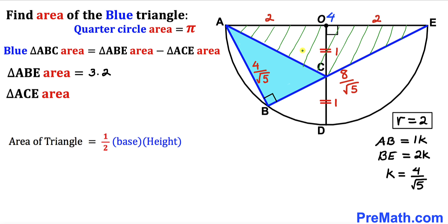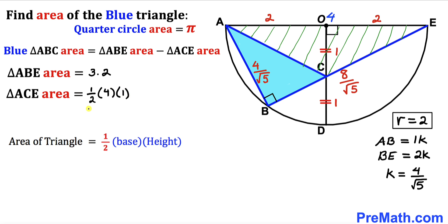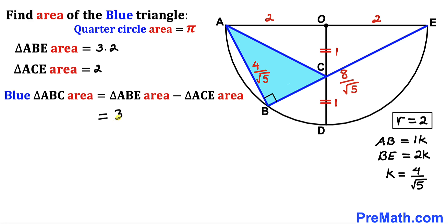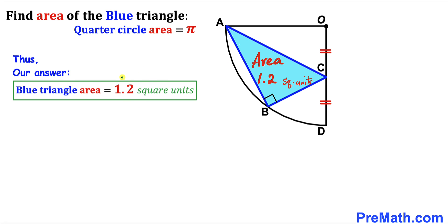Now we calculate the area of triangle ACE. Using the same formula, our base is 4 and our height is 1. So the area of triangle ACE equals one half times 4 times 1, which equals 2. Finally, the area of blue triangle ABC equals 3.2 minus 2, which gives us 1.2. So the area of the blue triangle turns out to be 1.2 square units.